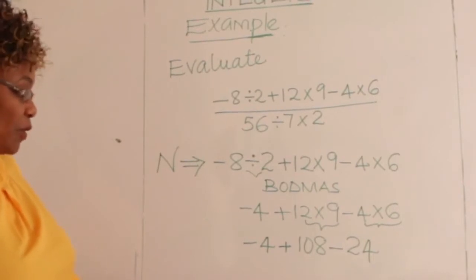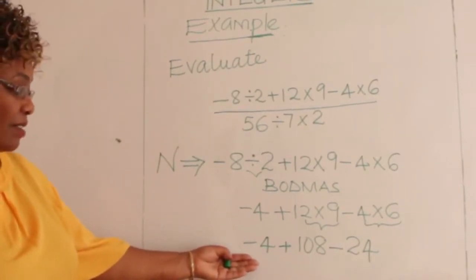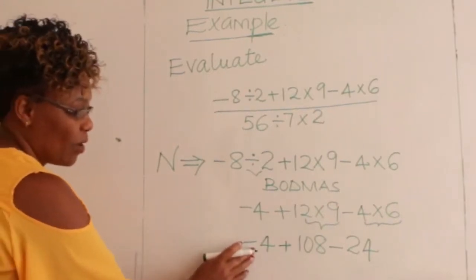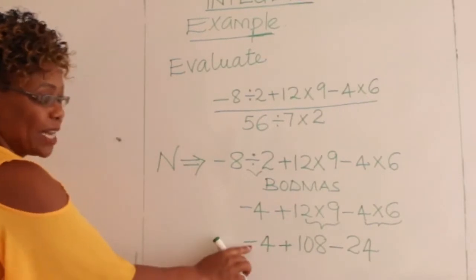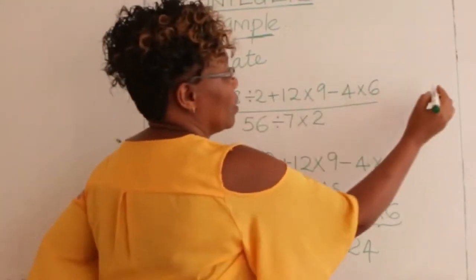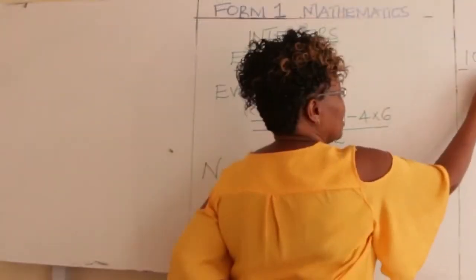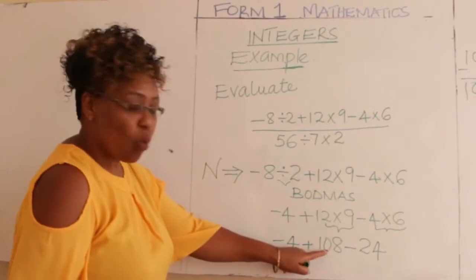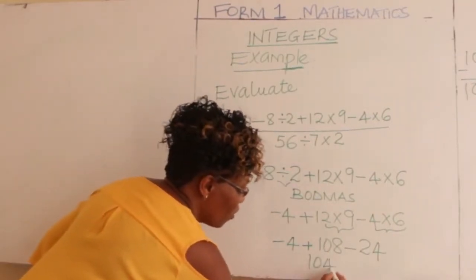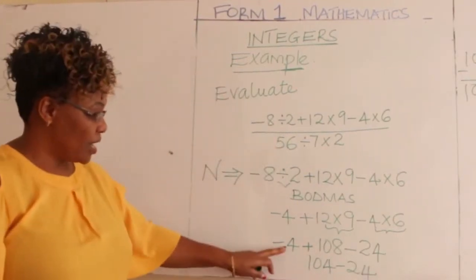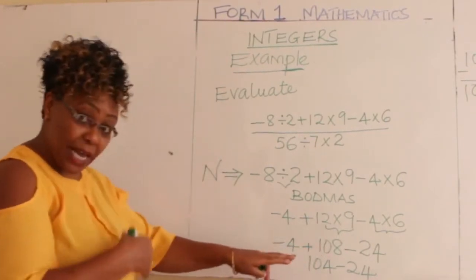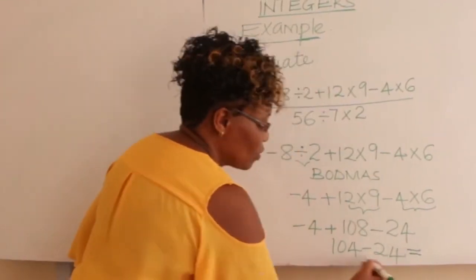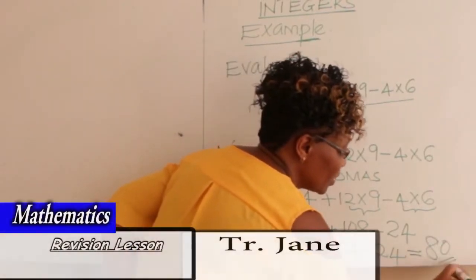4 times 6 gives you 24. So now we work out: minus 4 plus 108 minus 24. Minus 4 plus 108 gives us 104. Then 104 minus 24 gives you 80. So that is your numerator — 80.